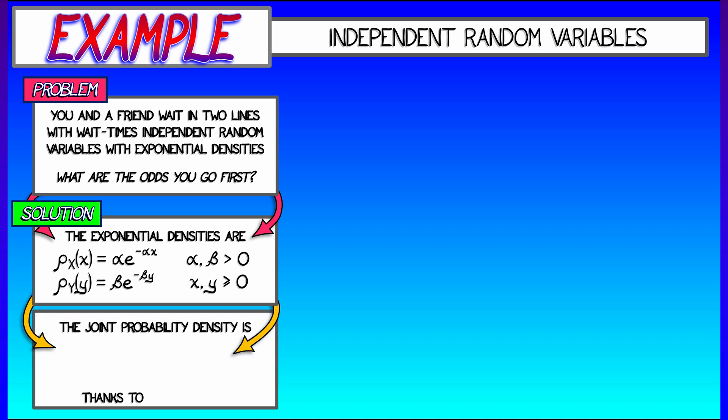Because these are independent, the joint probability density is the product of these two functions. That is, α times β times e to the minus quantity (αx + βy). Okay, so that's our joint probability density. How do we solve this problem?